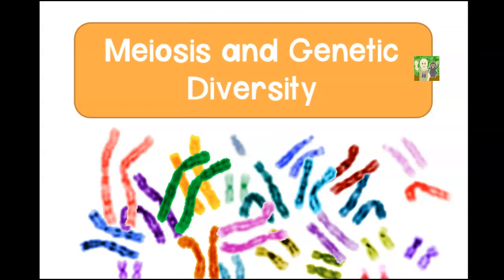Welcome AP Biology students. This is your lecture on Unit 5, which is the study of heredity. In Topic 1 we're going to look at meiosis, and in Topic 2 we're going to look at meiosis and genetic diversity.